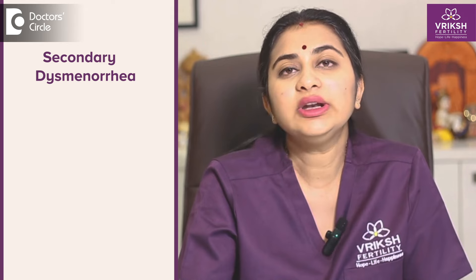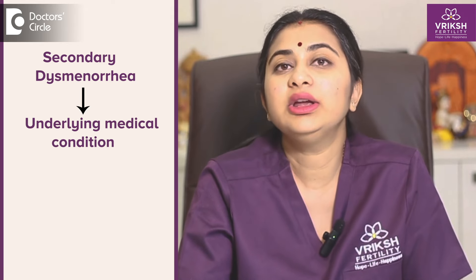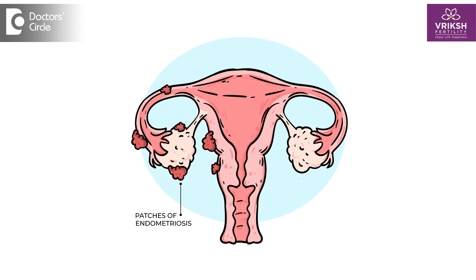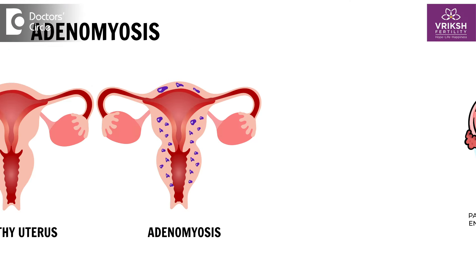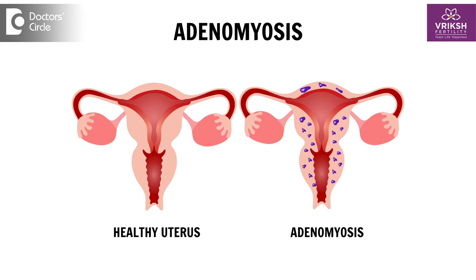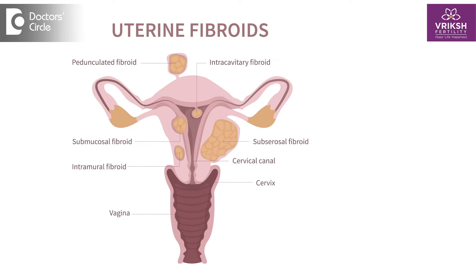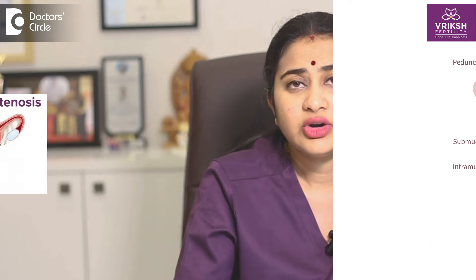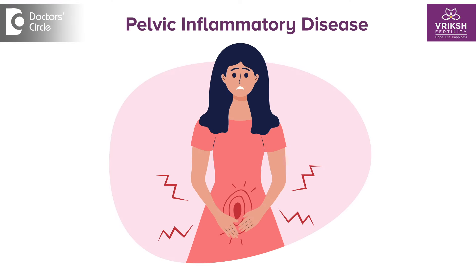Secondary Dysmenorrhea means there is dysmenorrhea because of certain underlying medical conditions like Endometriosis, Adenomyosis, Uterine Fibroids, Cervical Stenosis, or other conditions like Pelvic Inflammatory Disease, etc.